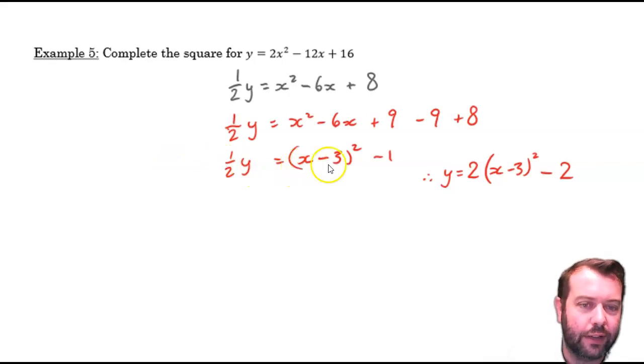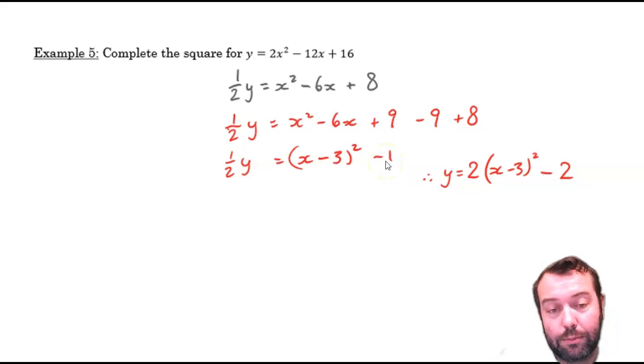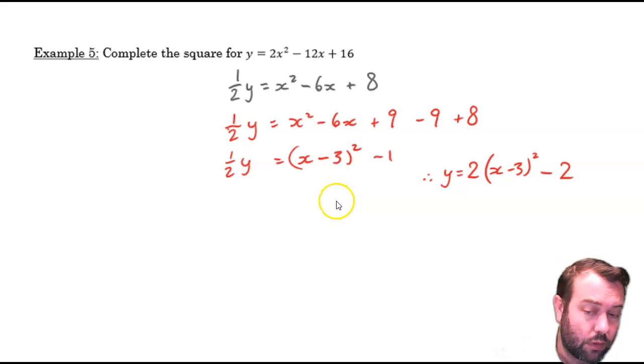So, half of y is x minus 3 squared minus 1. And it's not quite written as a square, having completed the square, because I don't really want half of y. I want y. So, we need to double both sides again. So, I double this term. I get 2 outside of that. I double that. I get negative 2. Sorry about the funny layout there. I just didn't leave quite enough space on the one note. So, that's completing the square for a non-monic.